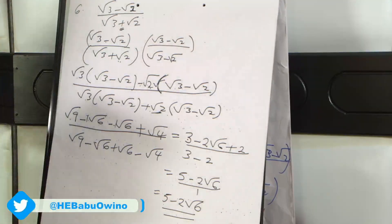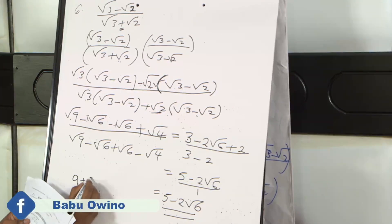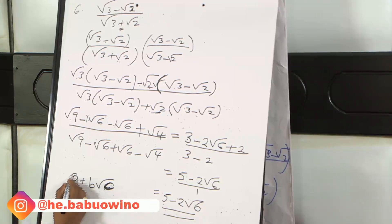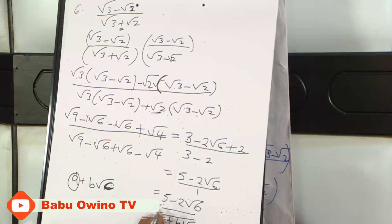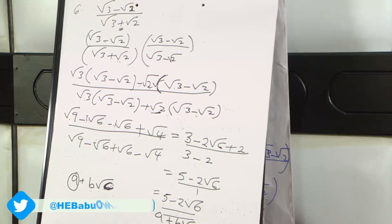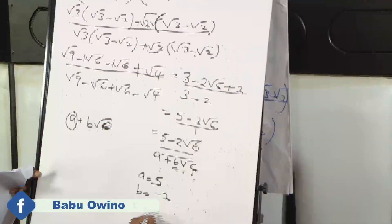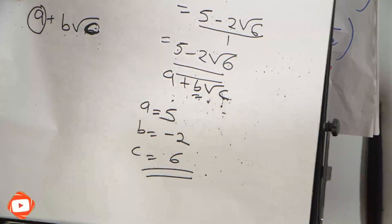But remember, we've been advised to write our answer in the form A plus B root C. So our value of A is 5 — tell the examiner that you know. Then B is minus 2. And then C is 6.